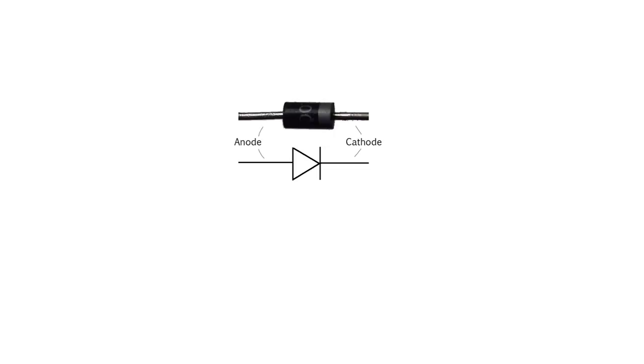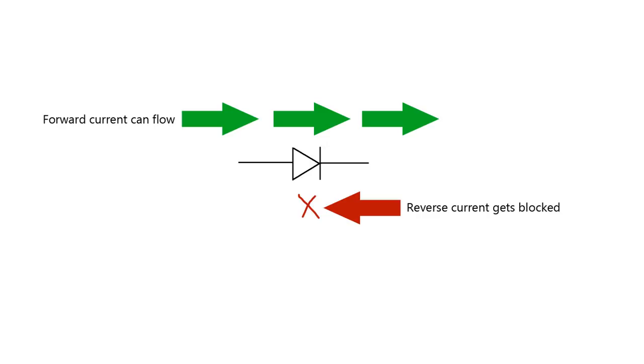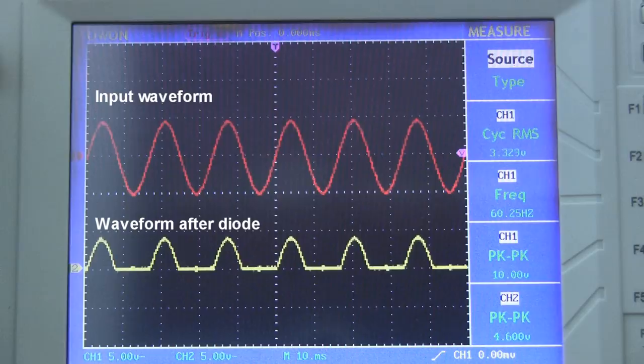Here's the schematic symbol of a diode and a picture of the real thing. The little stripe on the end of the diode tells you which way to put it in your circuit. But what is a diode? A diode is a device that only allows current to flow in one direction. A helpful way of remembering this is to compare diodes to water valves that only allow water to flow one way.